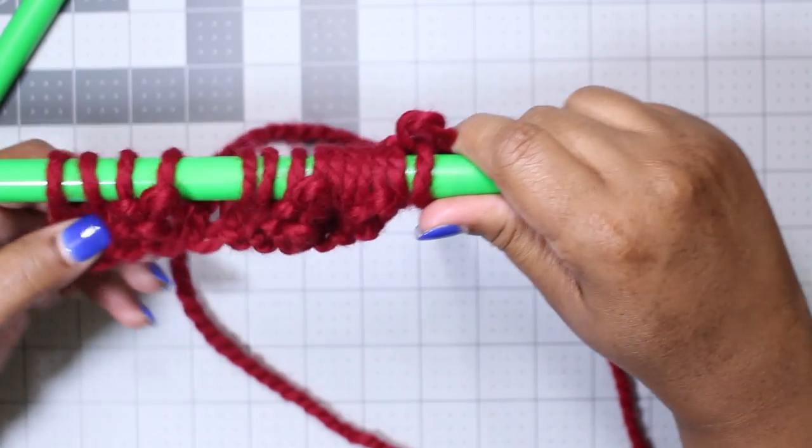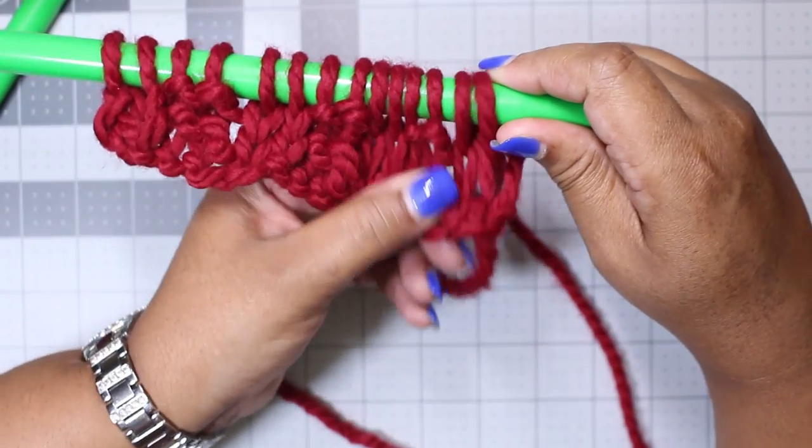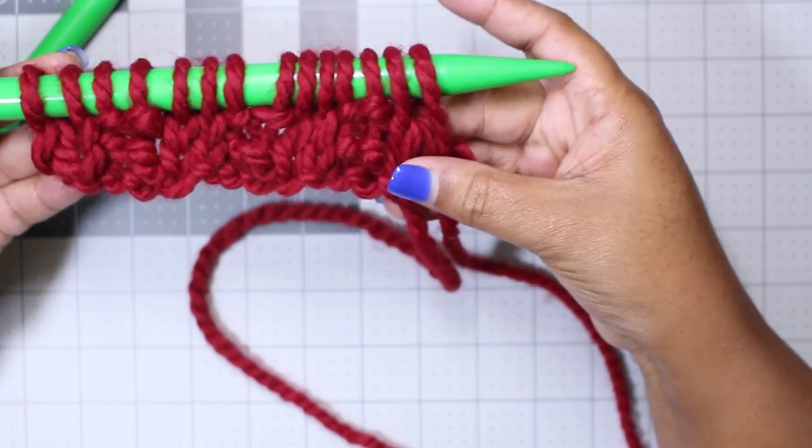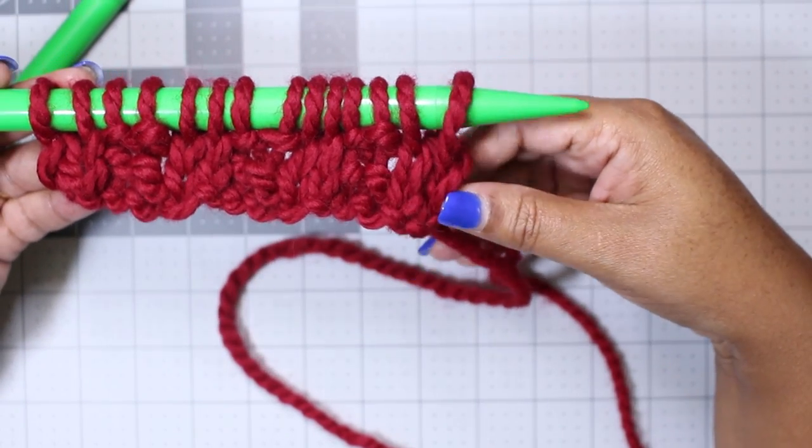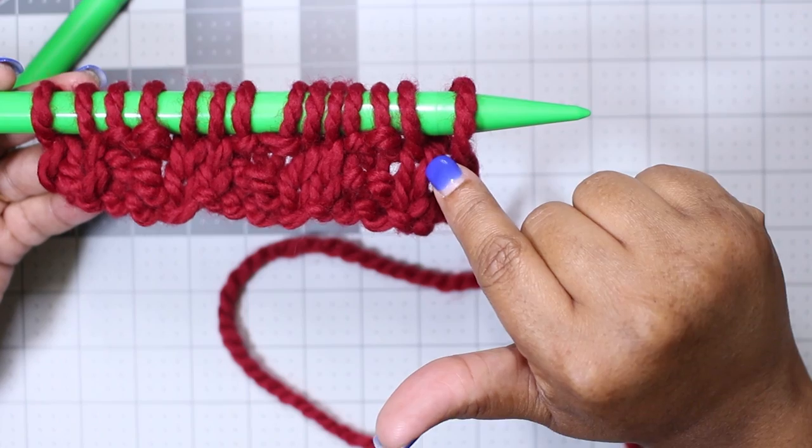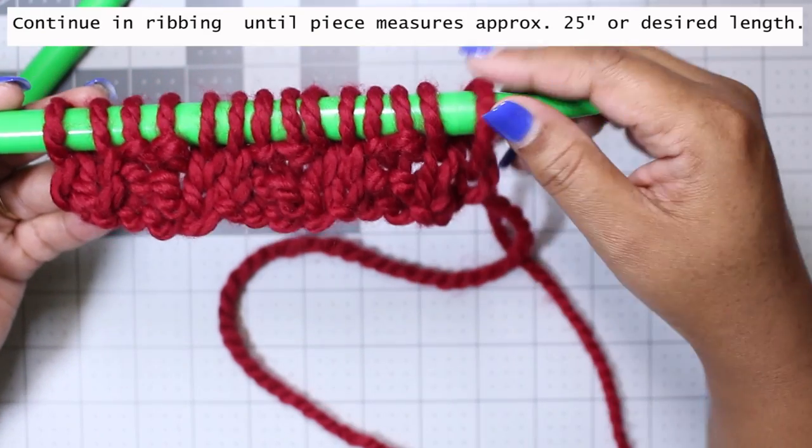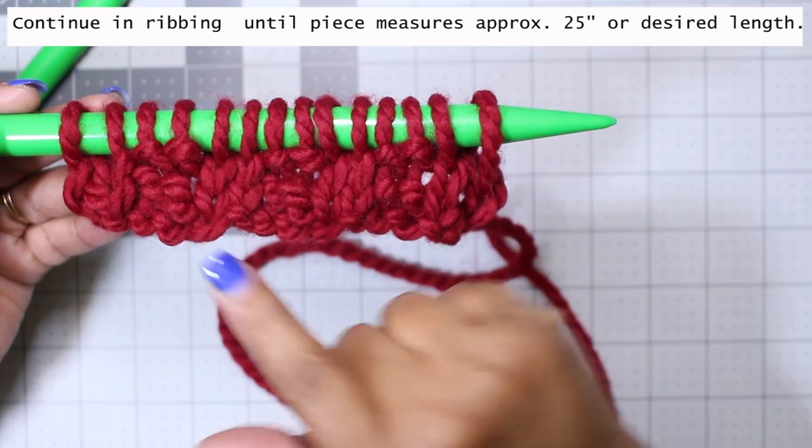Now we're done with our second row, and so we will continue in rib pattern until your desired length. I did my cowl up to about 25 inches, but you can continue and make it as long as you want to. That is absolutely up to you.